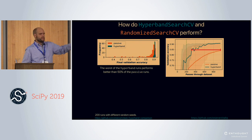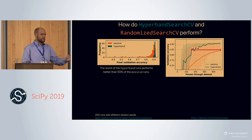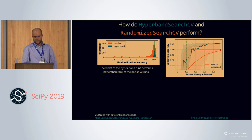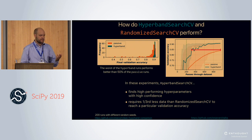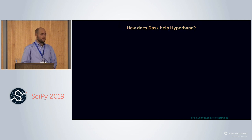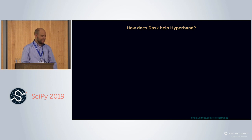The dotted green line represents the time — the passes through the data required to train four models to completion. These experiments are run on four cores. In these experiments, Hyperband finds values much more confidently, and it requires about a third of the data passes to actually reach a particular accuracy. Hyperband is very parallel and ready to be used by an advanced task scheduler.